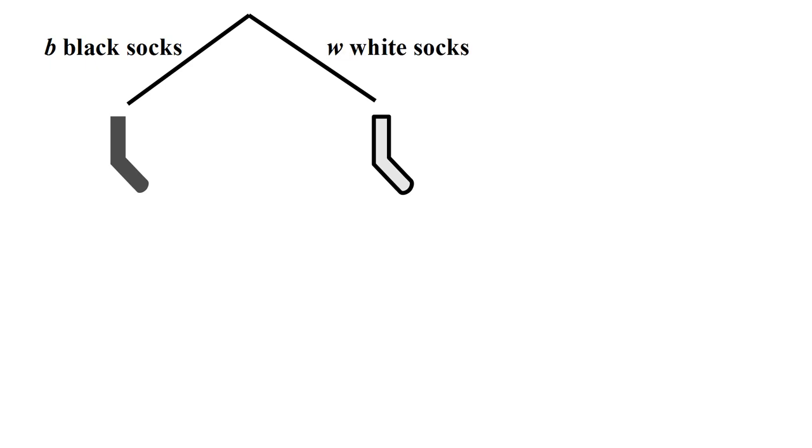We can solve this problem by drawing a tree of the possible ways to draw socks. On the first draw, you could draw a black sock, or you could draw a white sock. Suppose there are B black socks and W white socks.